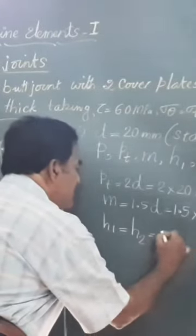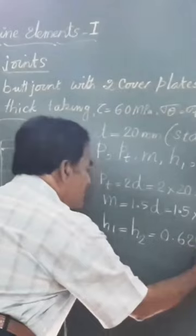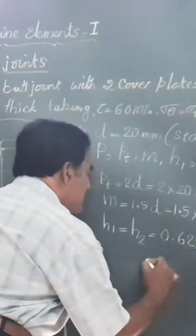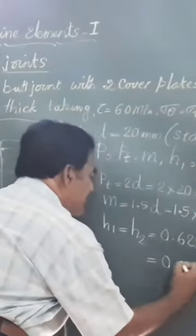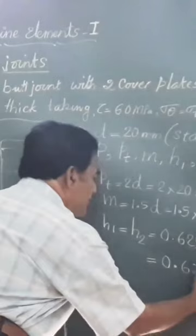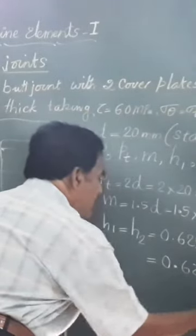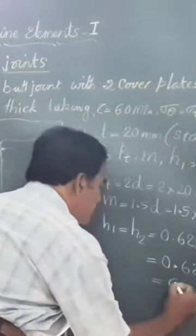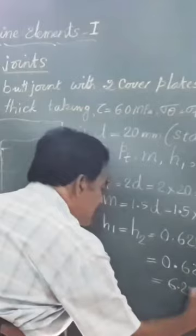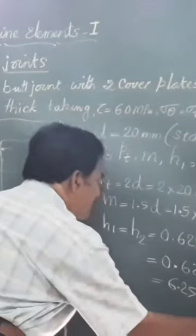That is given as 0.625 times h, where h is the thickness of the plates to be elevated. So 0.625 multiplied by 10 mm, that is given in the question, and hence this works out to 6.25 millimeter.